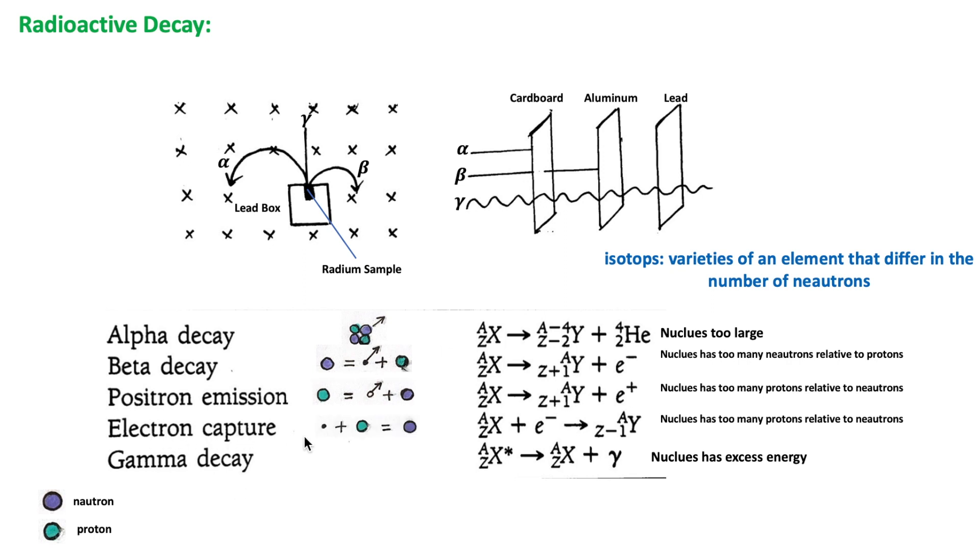For electron capture, the reason is that the nucleus has too many protons relative to the neutrons. The capture of an electron by a proton will change the proton into a neutron.